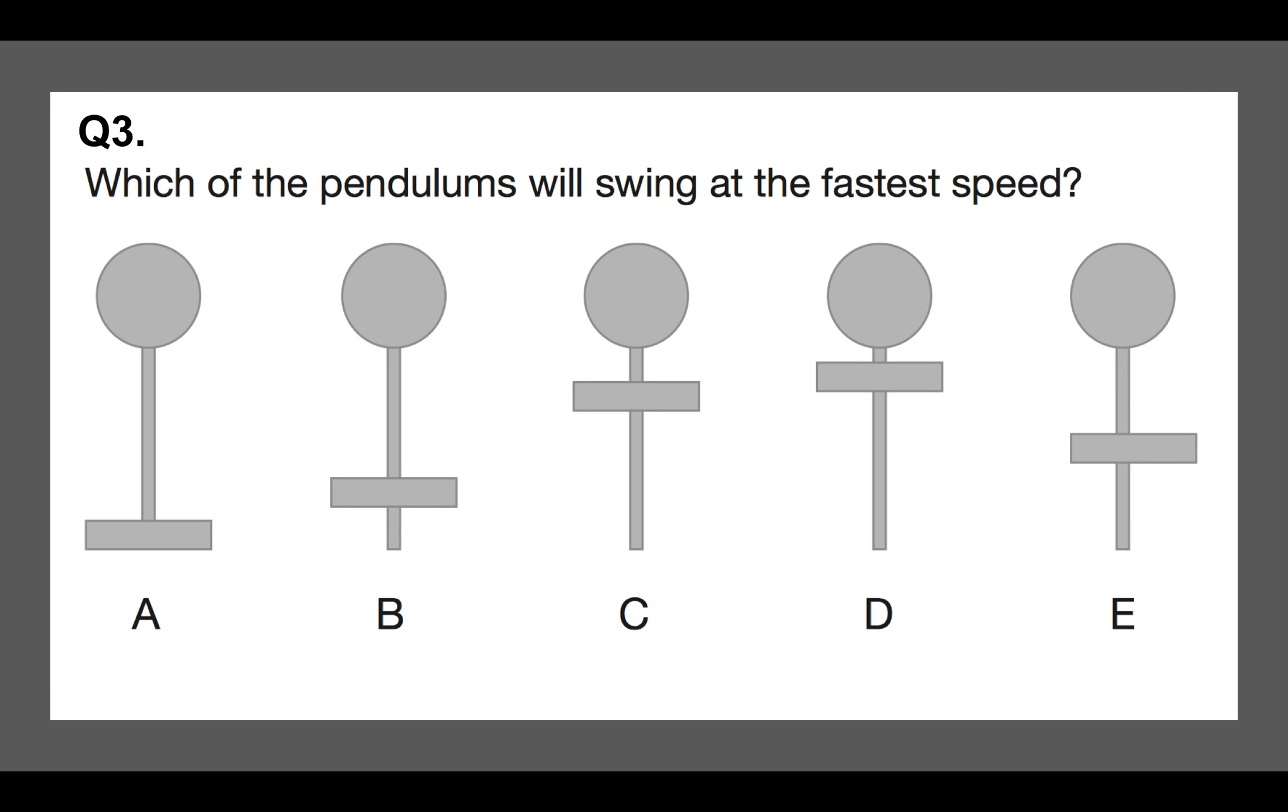Next one, which of the pendulums will swing at the fastest speed? So if you think of like an old grandfather clock and below it is a pendulum, which helps the clock to rotate and to go around and to operate, which of the pendulums out of A, B, C, D and E will swing at the fastest speed? Now there's one simple rule with pendulums, and that is the higher up the bar is, the faster it will swing.